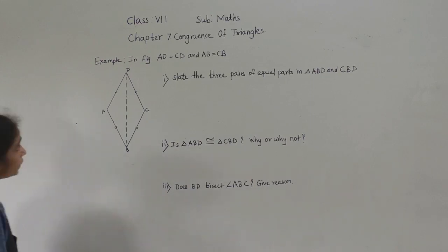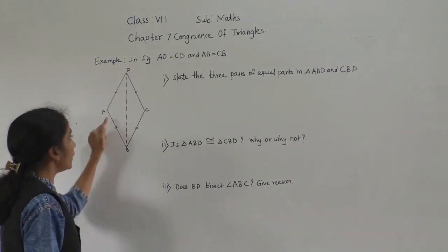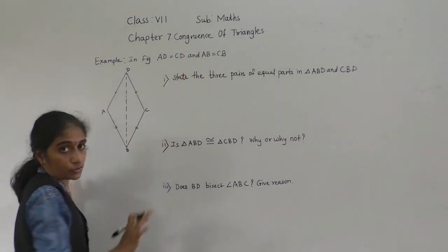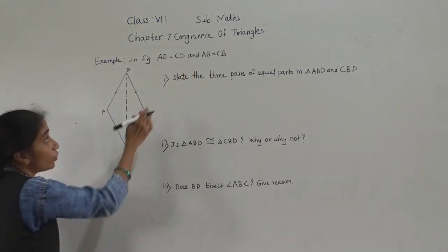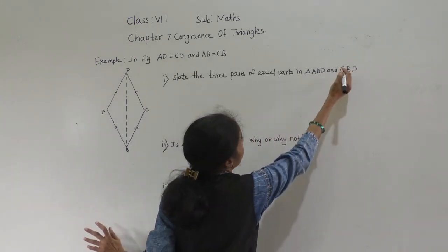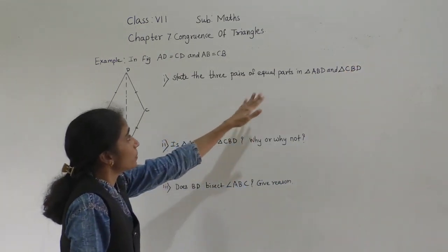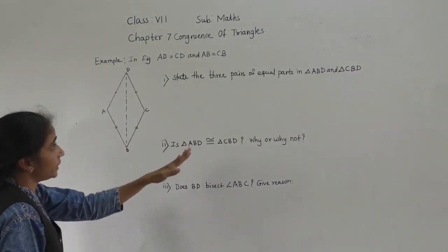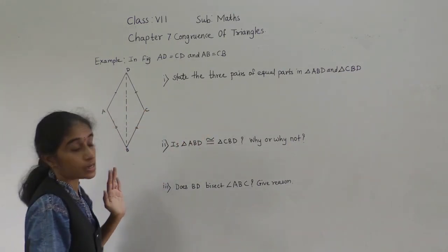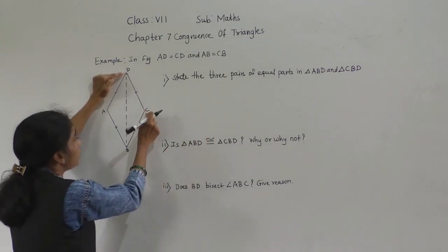Let's look at the next example. In the figure, AD is equal to CD, and AB is equal to CB — this is given in the question. State the three pairs of equal parts in triangle ABD and triangle CBD.